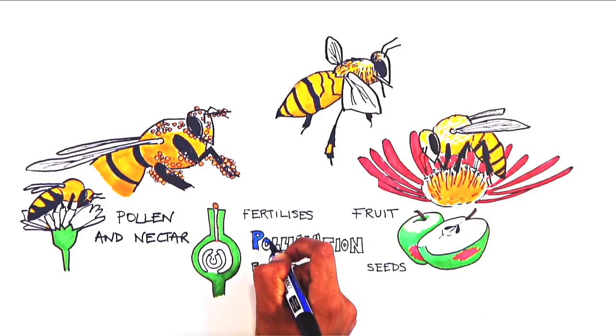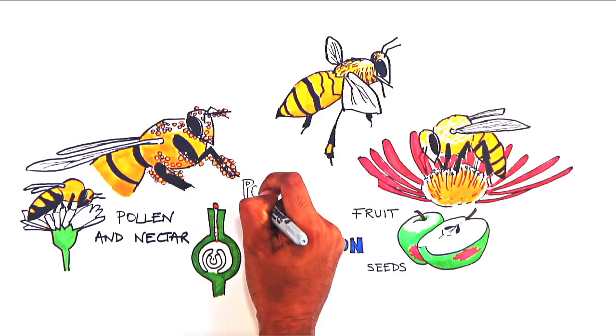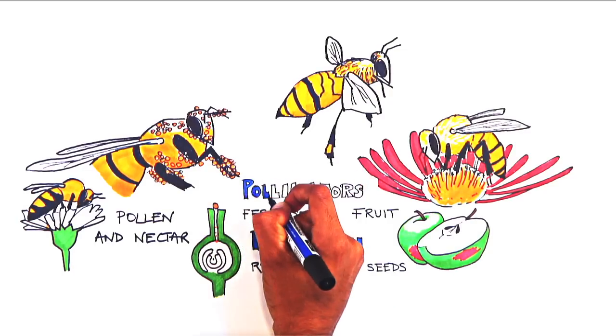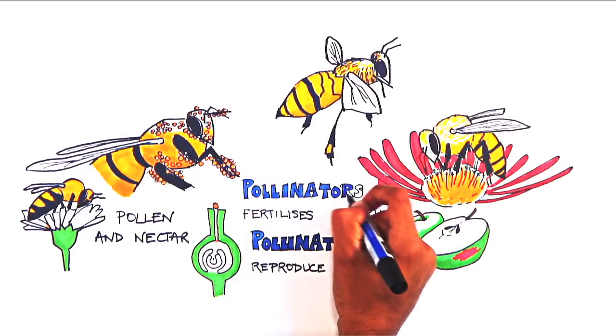This process is called pollination, and insects like bees that transfer pollen between plants are known as pollinators.